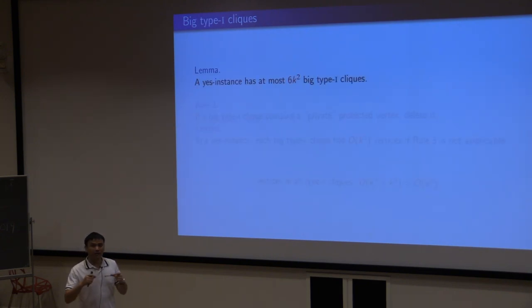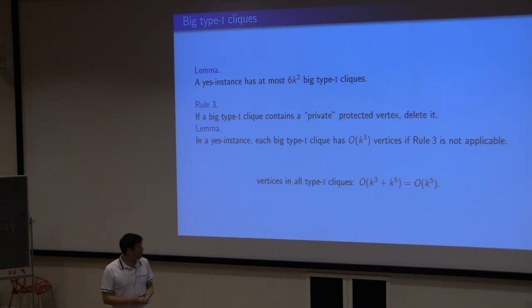We use the same idea. We can bound the number of type one cliques, including those big ones. But now we need to bound the size as well. The rule is, if a big type one clique has a private vertex—that means this vertex is protected and only in this big bad clique—if it's private and protected, it's deleted. After that, we can show, if the instance is a yes instance, it cannot have more than k cubed vertices. Then, we get a bound of all the vertices in all the type of bad cliques.